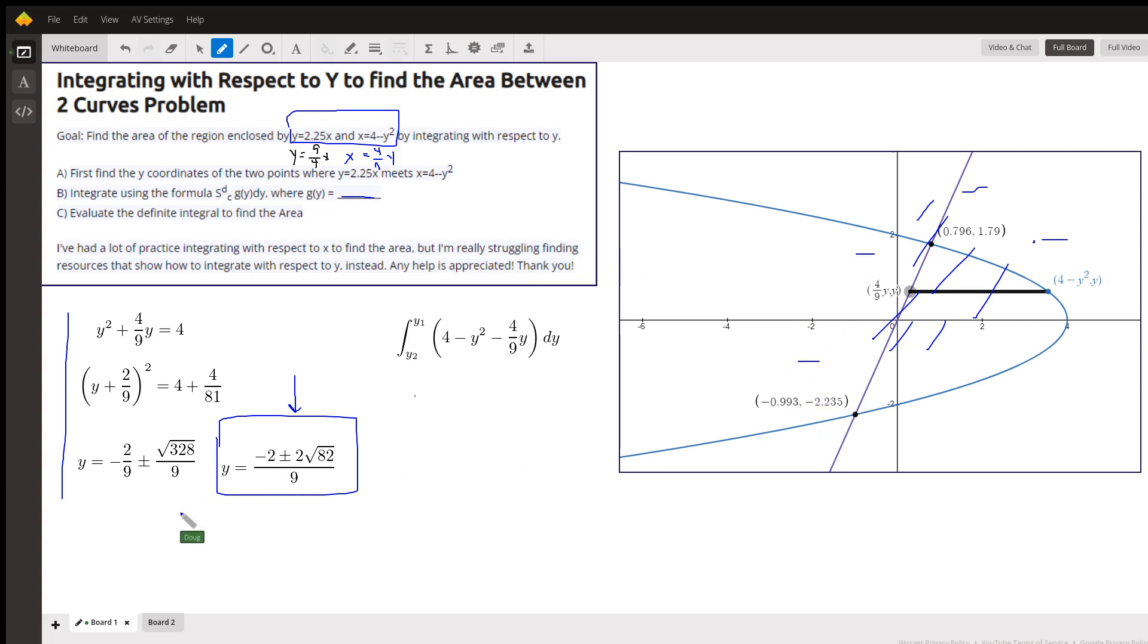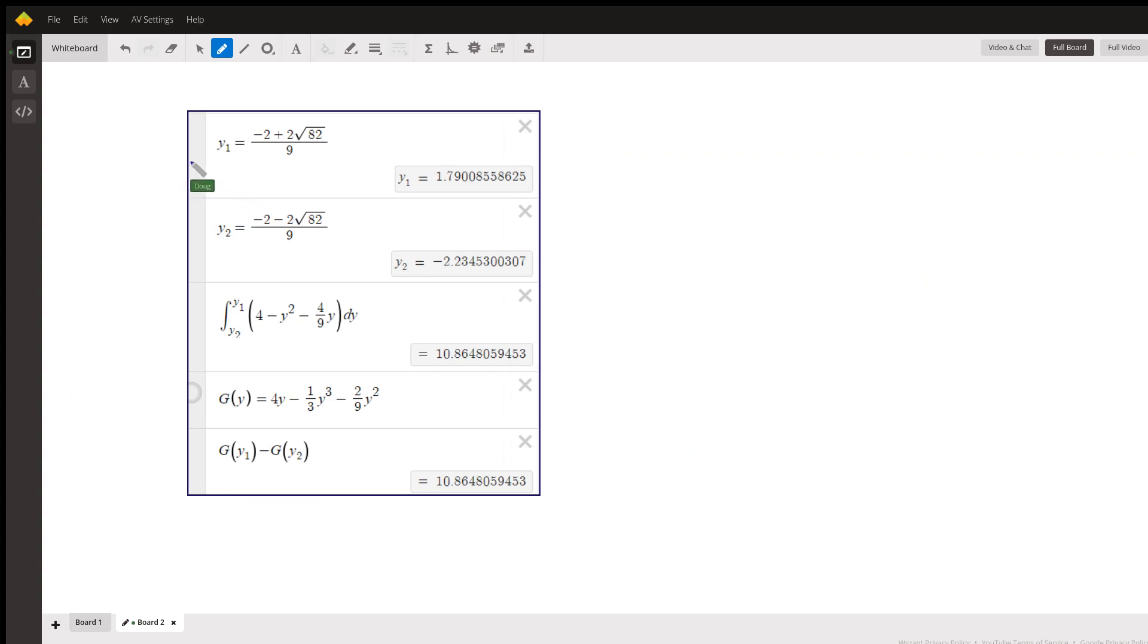If we go to the next board, there's y sub 1, which I put as this point up here, and this is the y sub 2 decimal approximation. There's the integral. There's the antiderivative. And if I evaluate the antiderivative, g of y sub 1 minus g of y sub 2, I get the same thing.